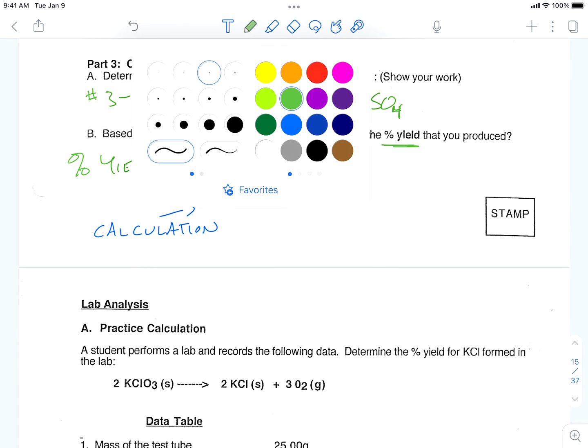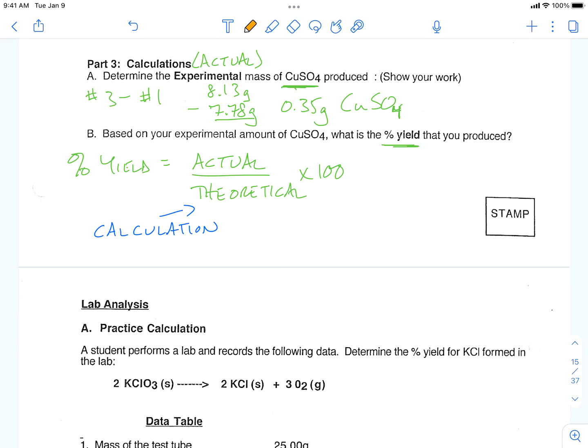So plugging in our numbers from our equation, what we actually made was 0.35 grams of copper sulfate, which is coming from up here. The theoretical, which was coming up from the top, was 0.35 grams. And so I got 100% yield.